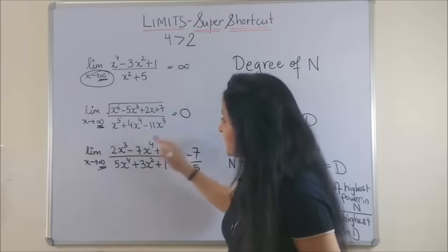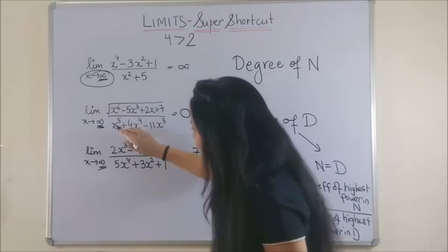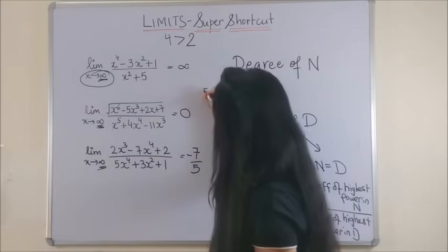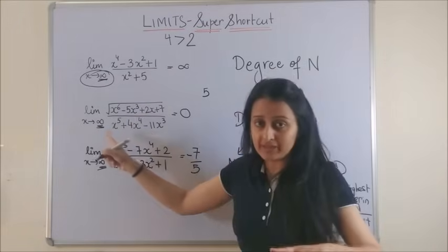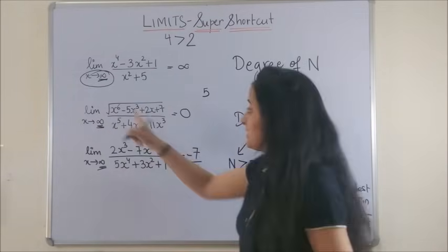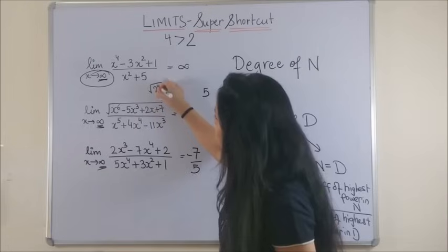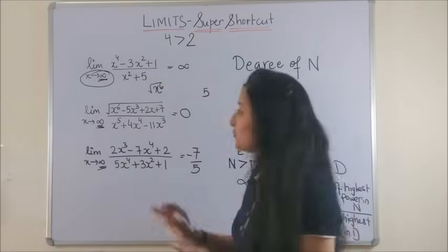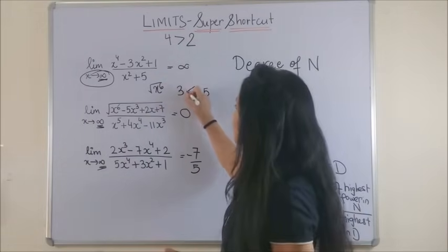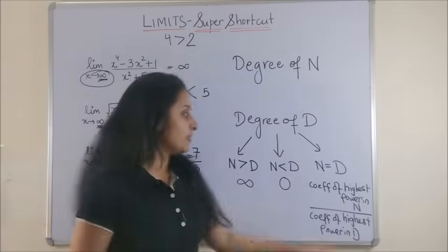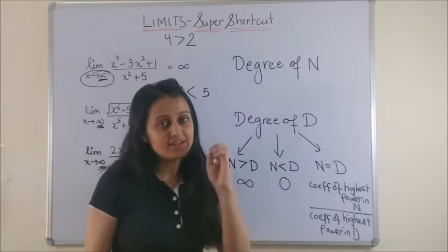And if, like in the second case, your degree of denominator is 5, however, degree of your numerator, you might think it is 6, but don't forget it is square root of x to the 6, which is actually x cube. So it is 3. It is less than that of the denominator. So the answer is simply 0.